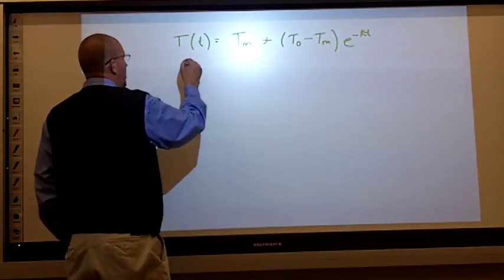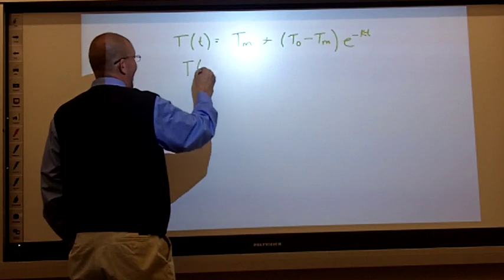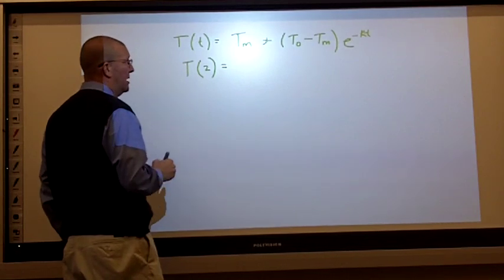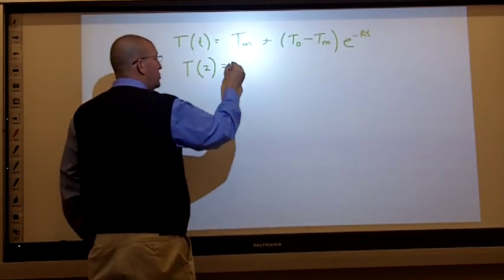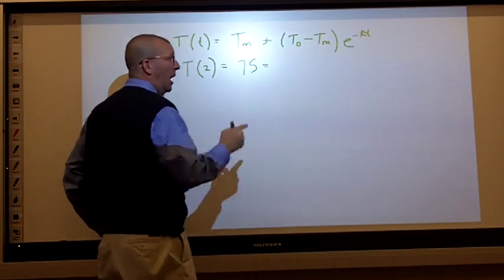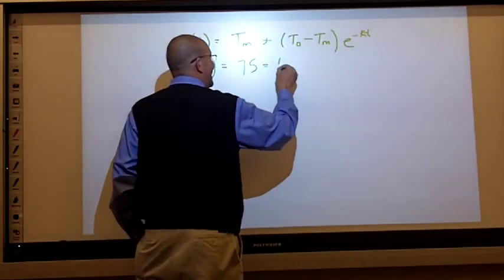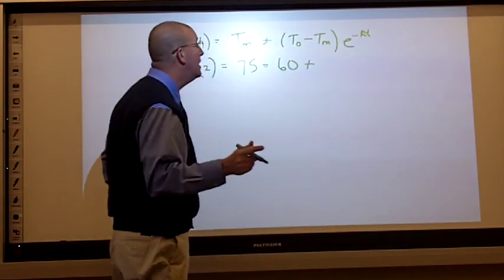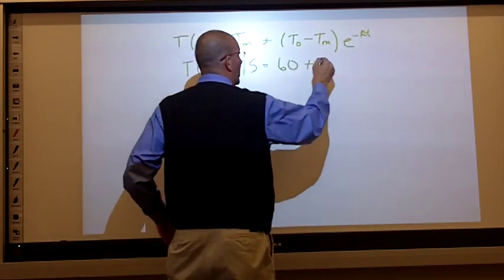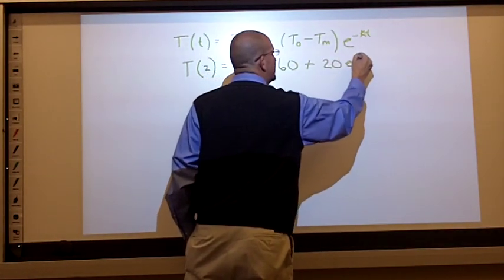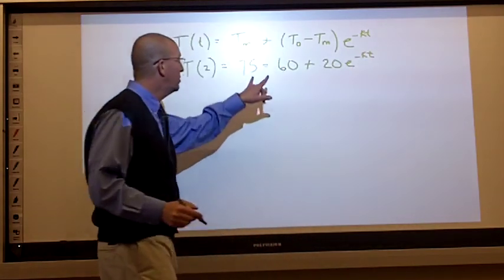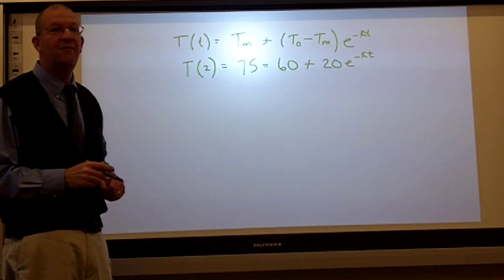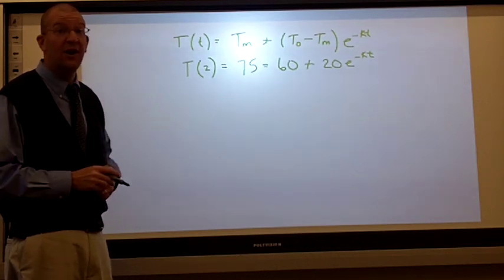What do we know? We know that at 2, the temperature was 75. Our medium was a constant 60. The difference between the initial temperature, which you remember was 80, and the medium was 20, E to the negative KT. We're going to use this equation, solve for little k, and then figure out when this occurred.